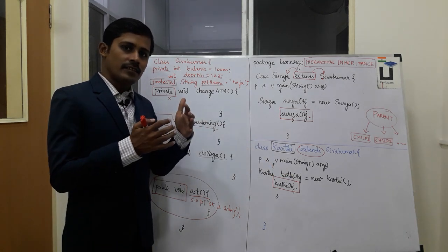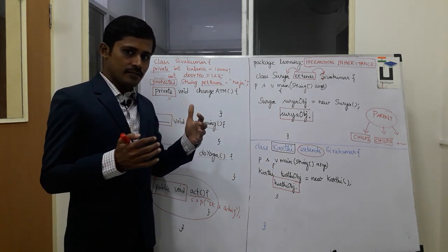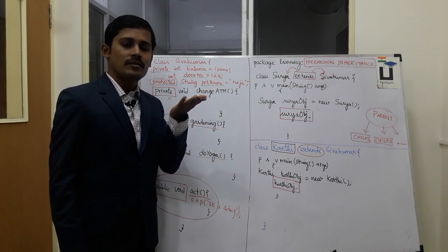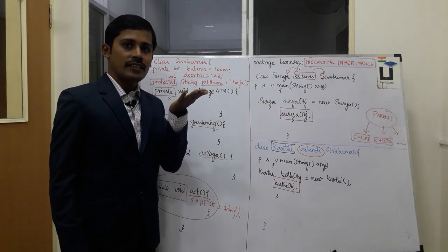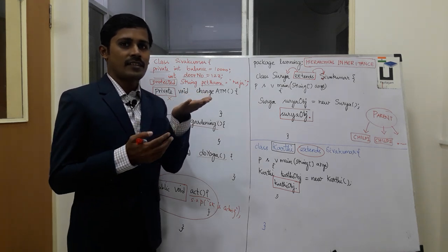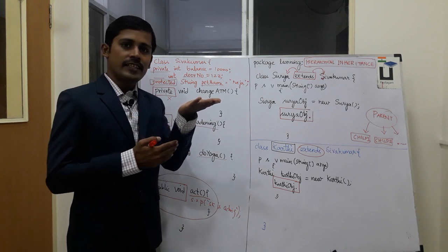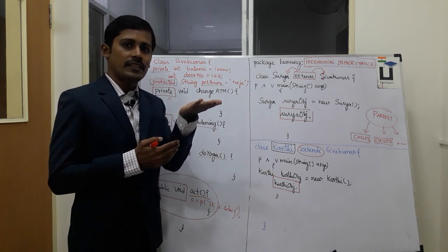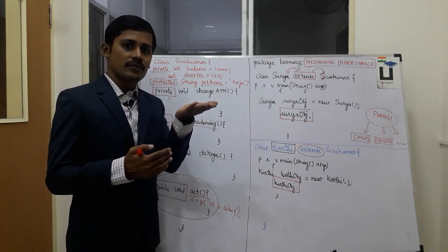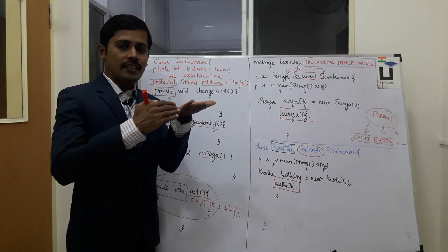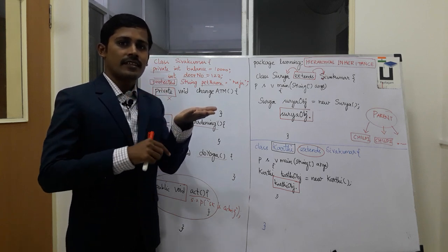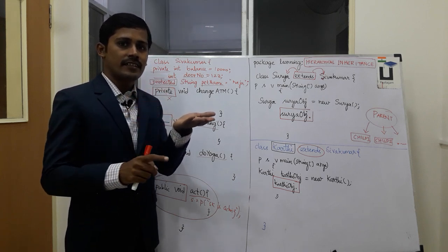If we talk about this example, Reserve Bank is our parent class. Reserve Bank is the parent class. There is a child class — State Bank, Indian Overseas Bank, and Indian Bank. These are the child classes. This is Hierarchical Inheritance.